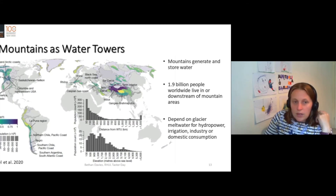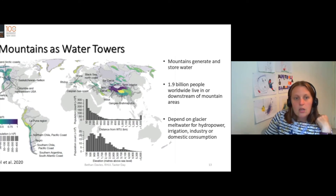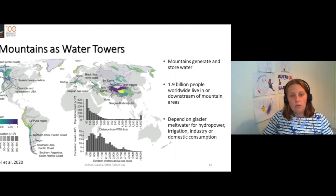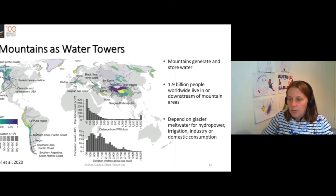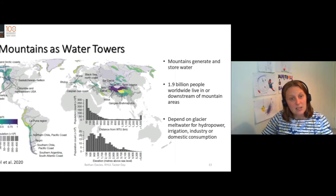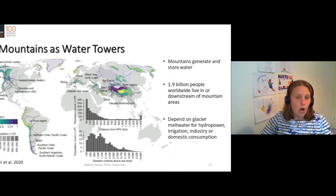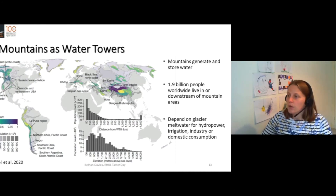And then in South America, we've got the Negro and Southern Chile Pacific coast. These are also very important water towers. They're producing water that's being used in the east of these mountain regions, where it's very dry in places like Argentina.